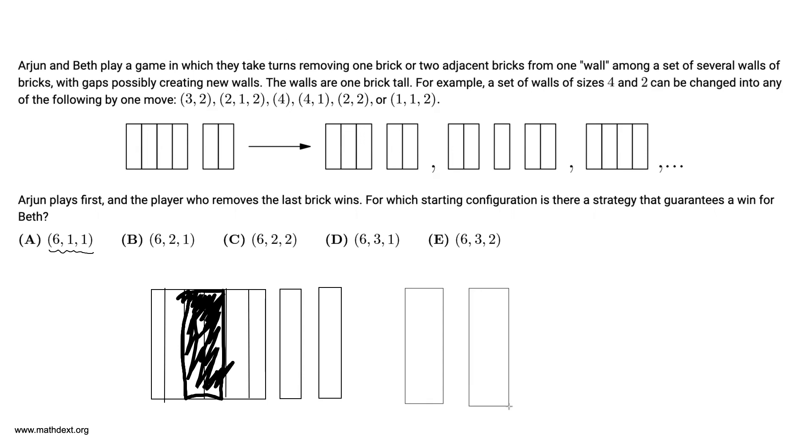And that's bad news for Beth, because whatever she does, he's going to copy her. So if, for example, she removes this block over here, Arjun is going to do the identical thing for another block of size two. He's going to take away this one. And similarly, if Beth decides to remove this one entirely, Arjun's going to take this one and remove it entirely. And then if Beth removes this one, Arjun's going to remove the last one and win. So 6-1-1, it turns out no matter what Beth does, Arjun can copycat it.